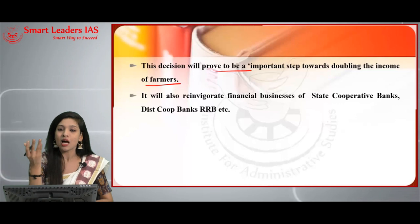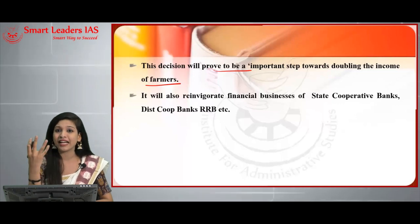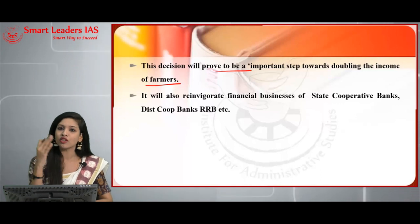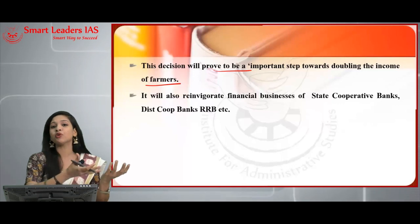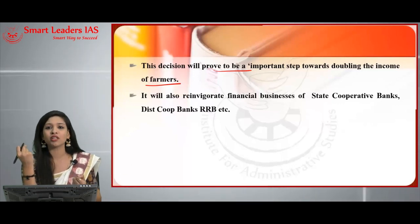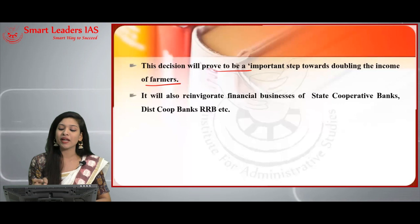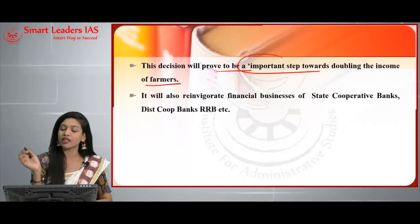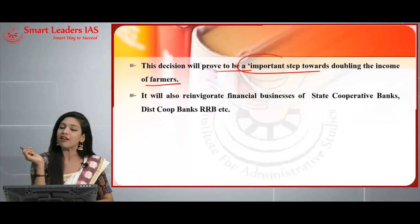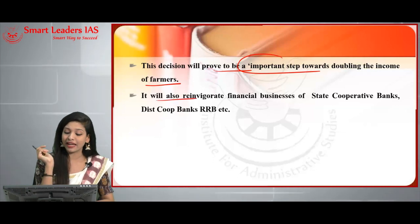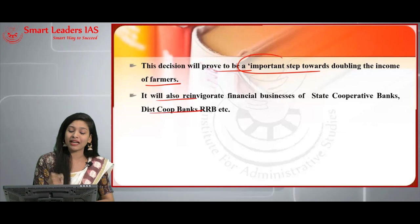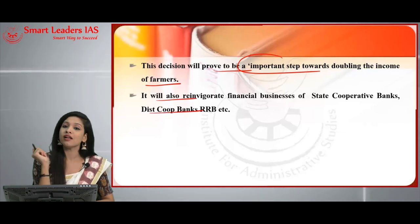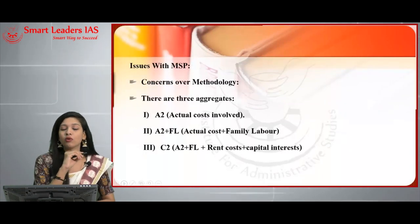More focus on increasing MSP is aimed at doubling farmers' income, given the threats they face in agriculture and related sectors. It ensures farmers have some income and helps bring them out of poverty. This will also reinvigorate the financial business of state cooperative banks, district cooperative banks, and RRBs — regional rural banks.